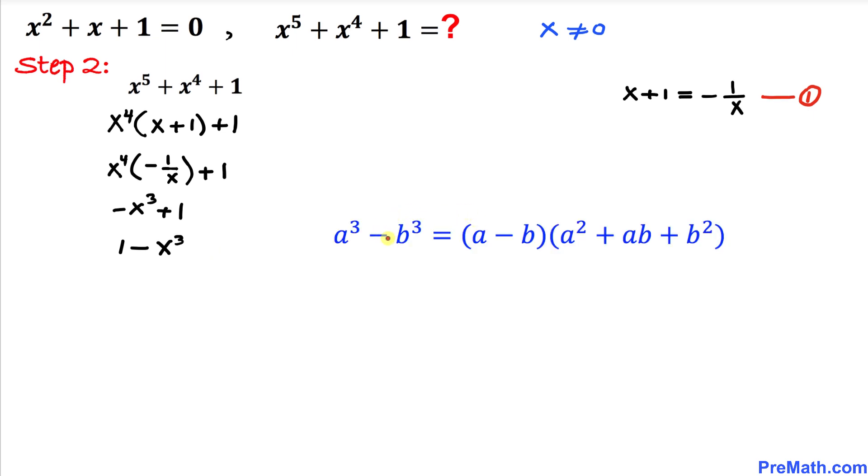Now let's recall this famous identity: a³ - b³. If I replace a by 1 and b by x, then we can write 1 - x³ as (1 - x)(1 + x + x²). But we know that 1 + x + x² = 0 from this very first equation.